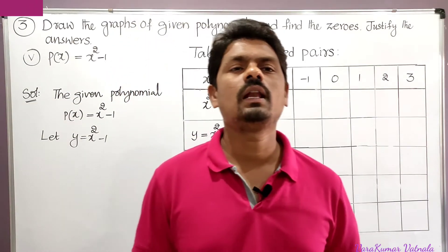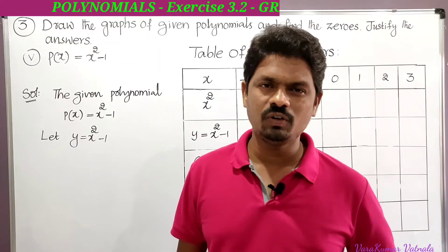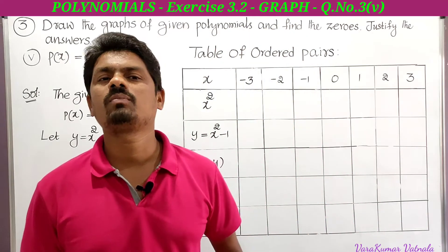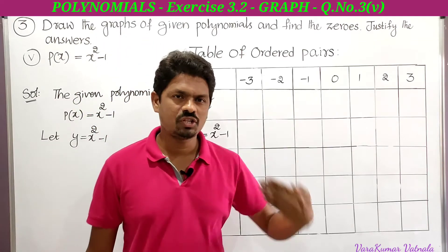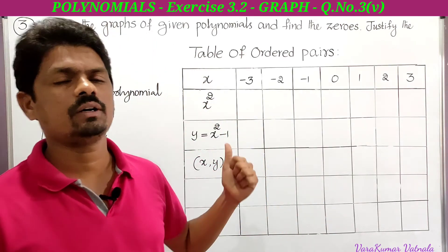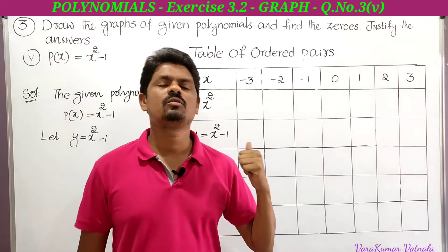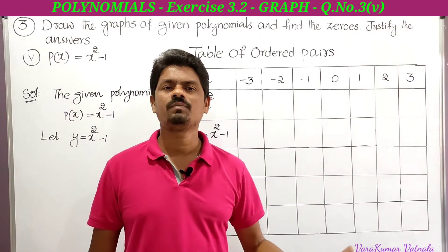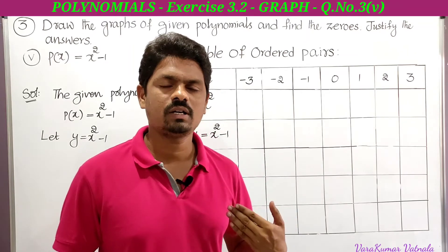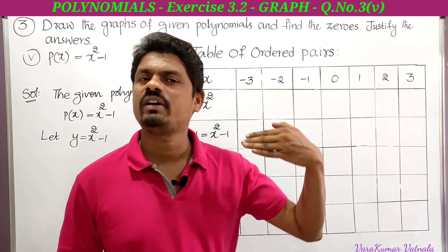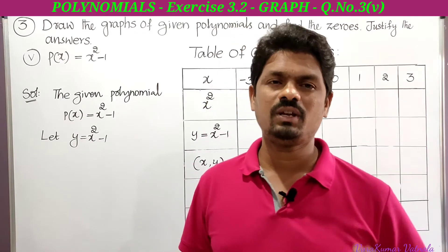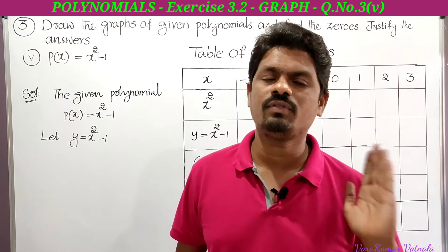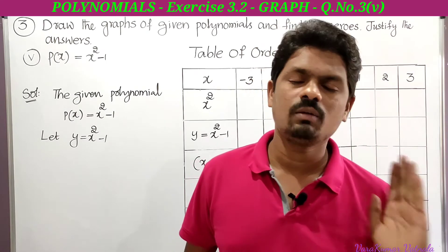Hi, hello! Welcome to my channel 'Air More Mass'. My name is Varak Mar. Today we are going to draw a graph of the quadratic polynomial from Exercise 3.2, third problem. This is the fifth part, so there are five parts in the third problem. We have already completed four parts — this is the fifth part, which is very important. We will draw the graph of the polynomial and find its zeros, as in the examination, for four marks.